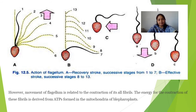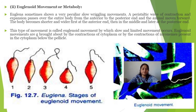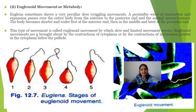Energy for flagellar movement is provided by ATP. In euglenoid movement, the body undergoes shortening and expansion in a slow, stepwise manner. A peristaltic wave of contraction and expansion passes over the entire body from the anterior to the posterior end, and the animal moves forward. The body becomes shorter and wider, first at the anterior end, then in the middle, and later at the posterior end. This slow and limited movement is called euglenoid movement.